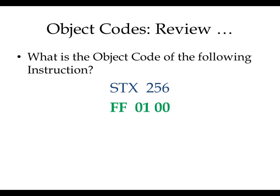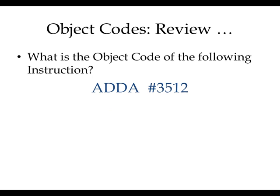Now for immediate mode — remember, some immediate instructions will be two bytes and some three bytes. For example, if the data is 3512, that cannot be one byte. So we know the operand is two bytes. The opcode is 8B, and the remaining part — the hex of 3512 — is 0DB8. You write it as 0D B8 because you always write it in two bytes.